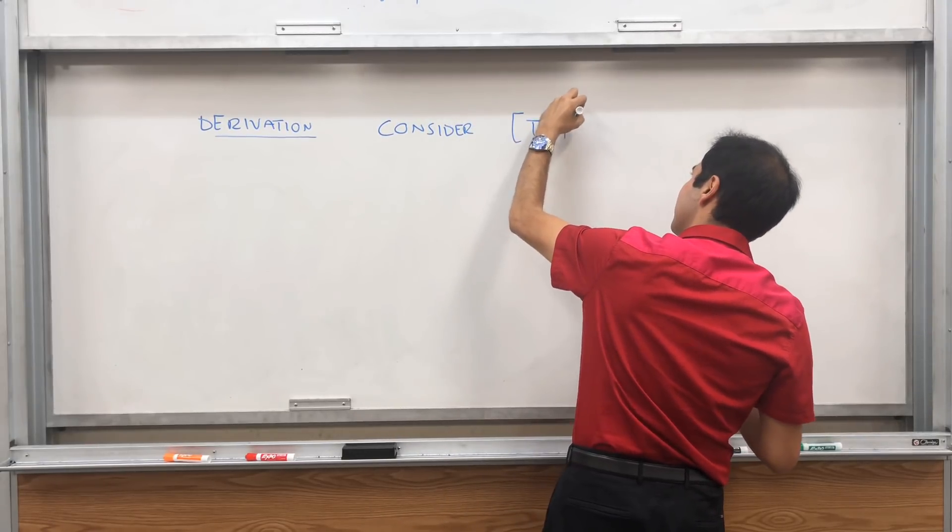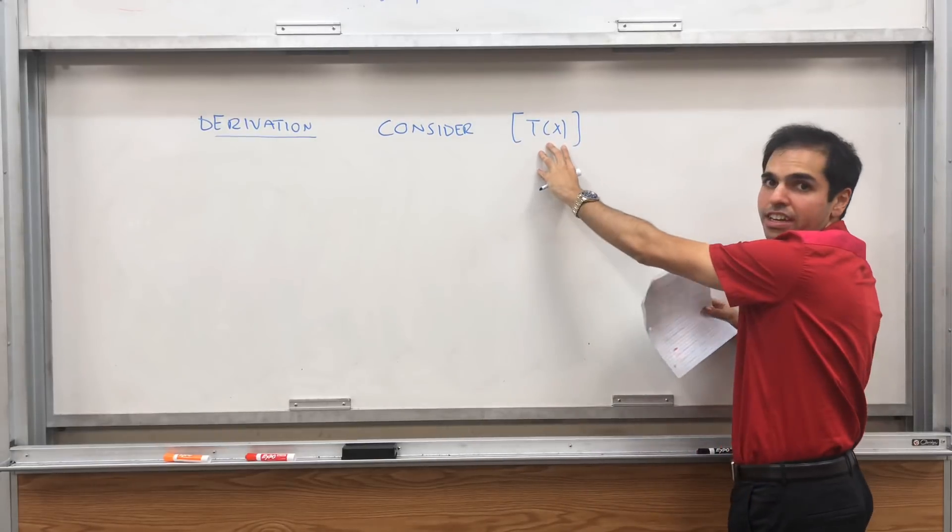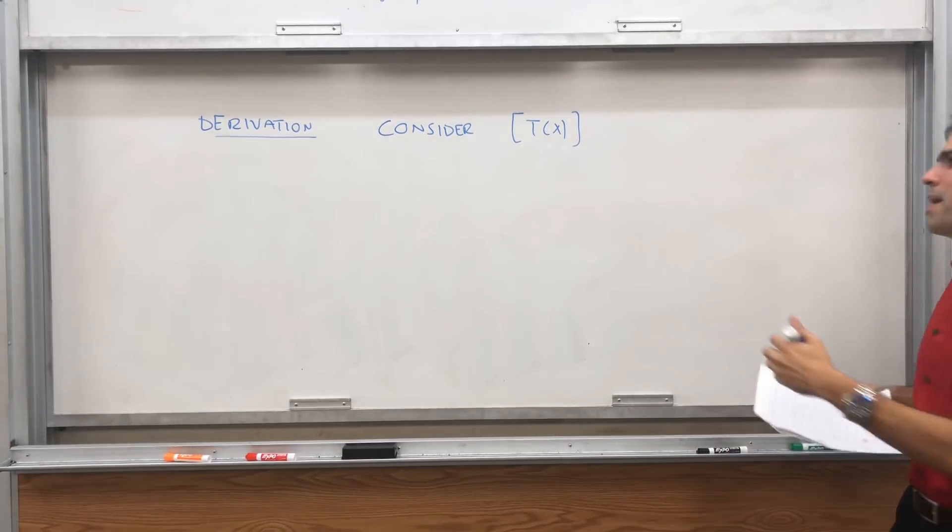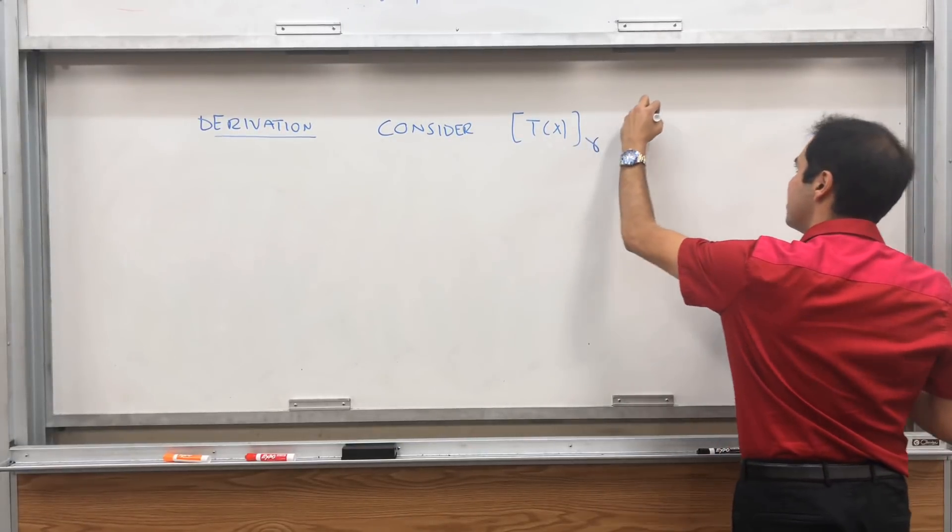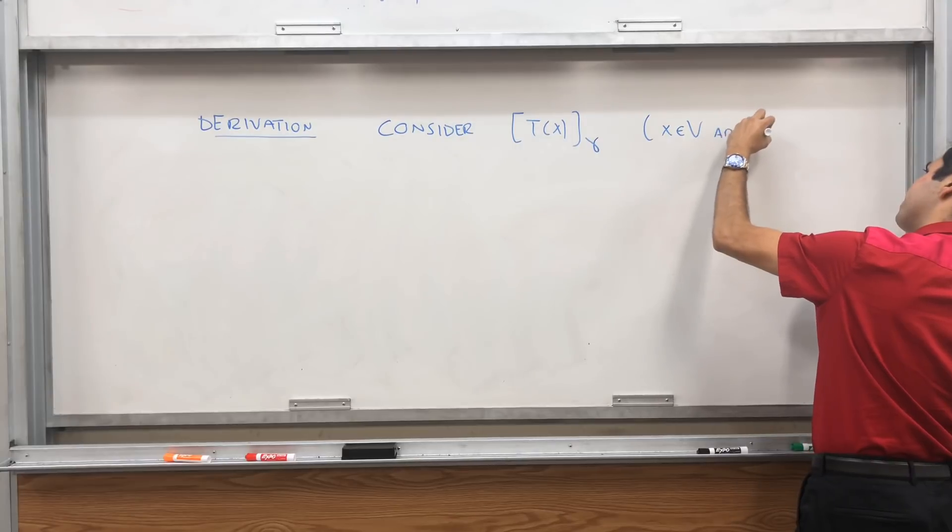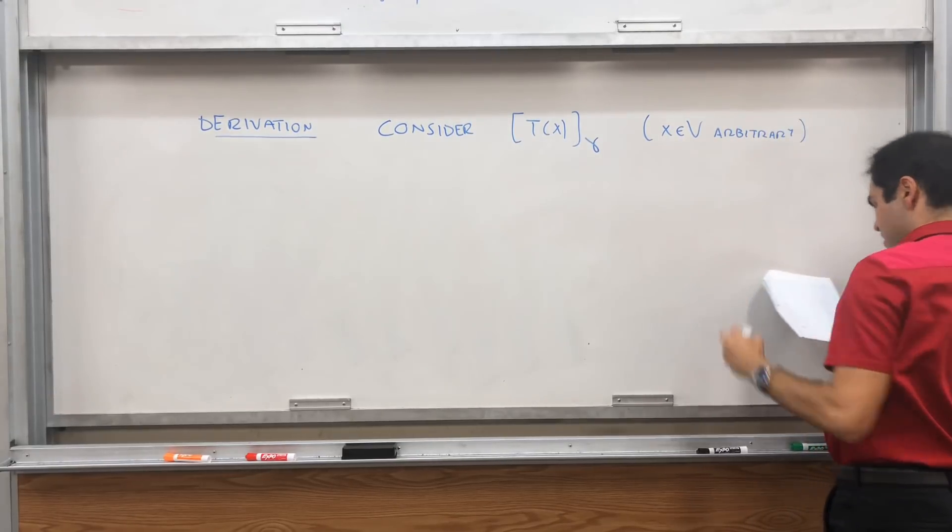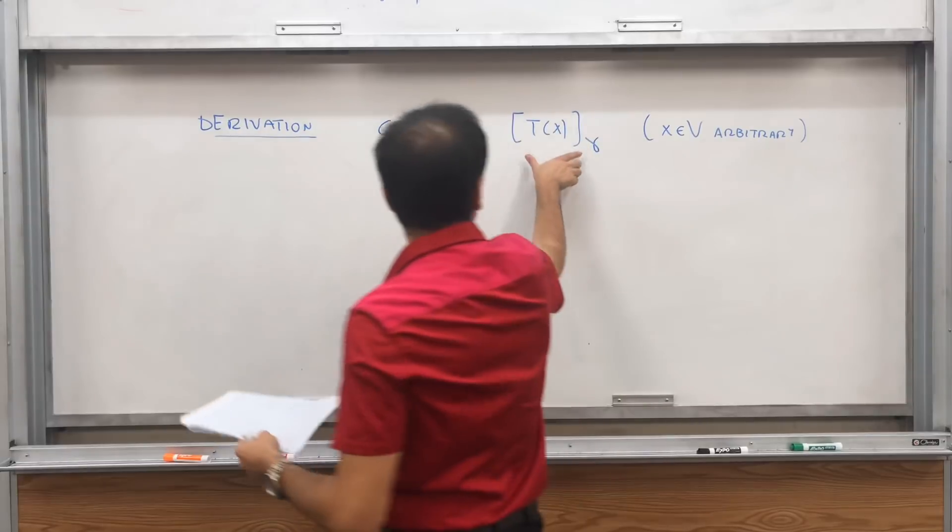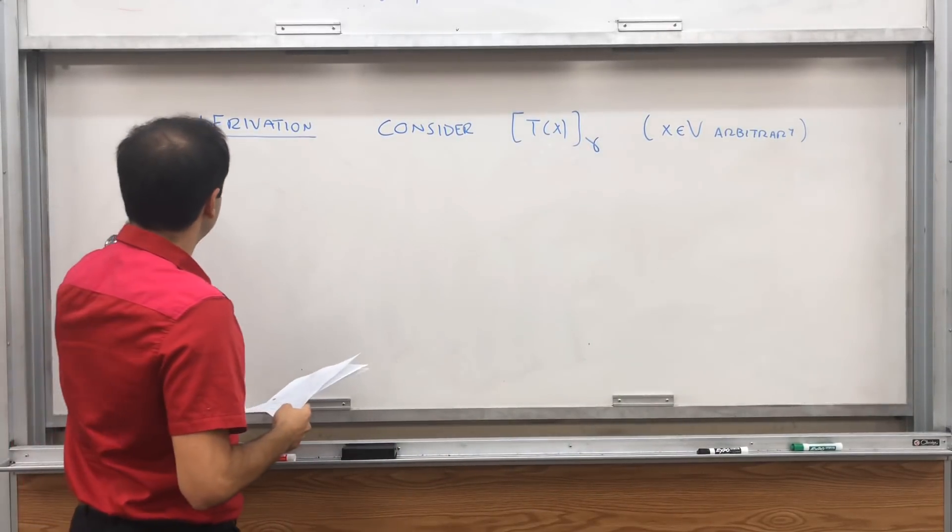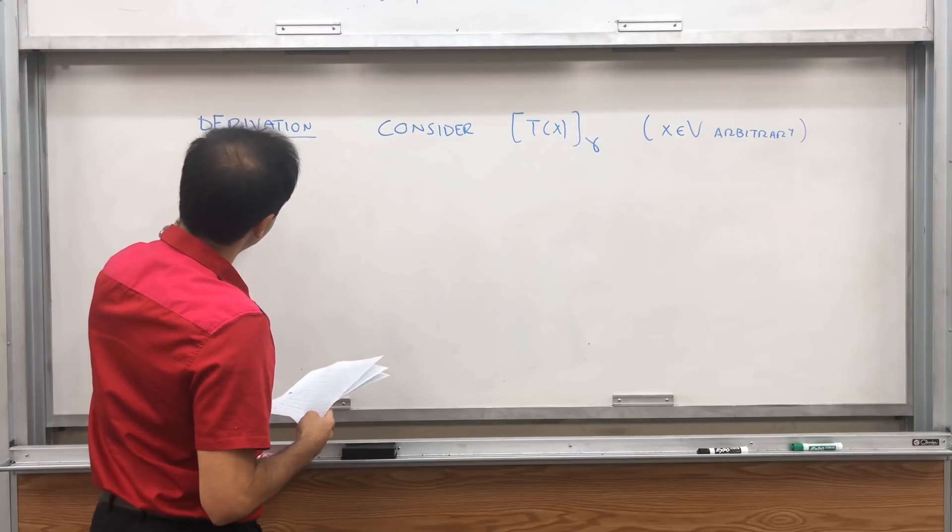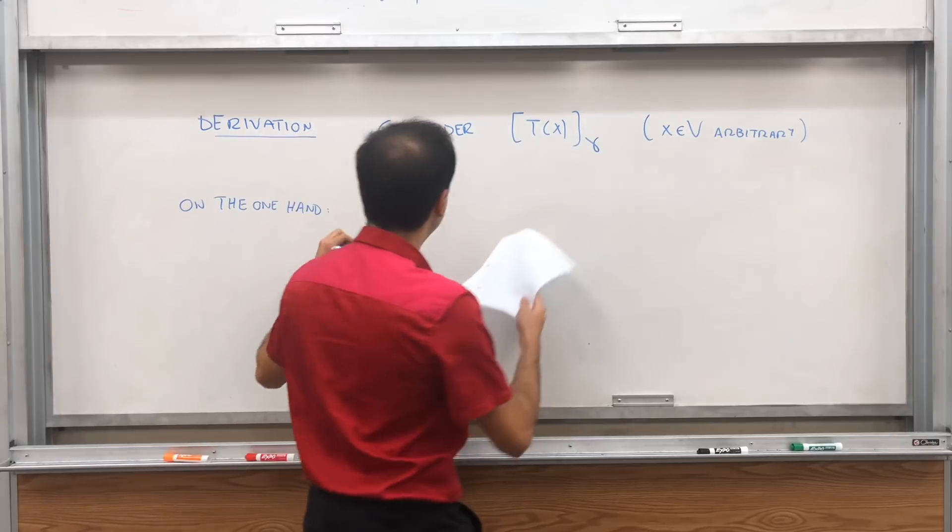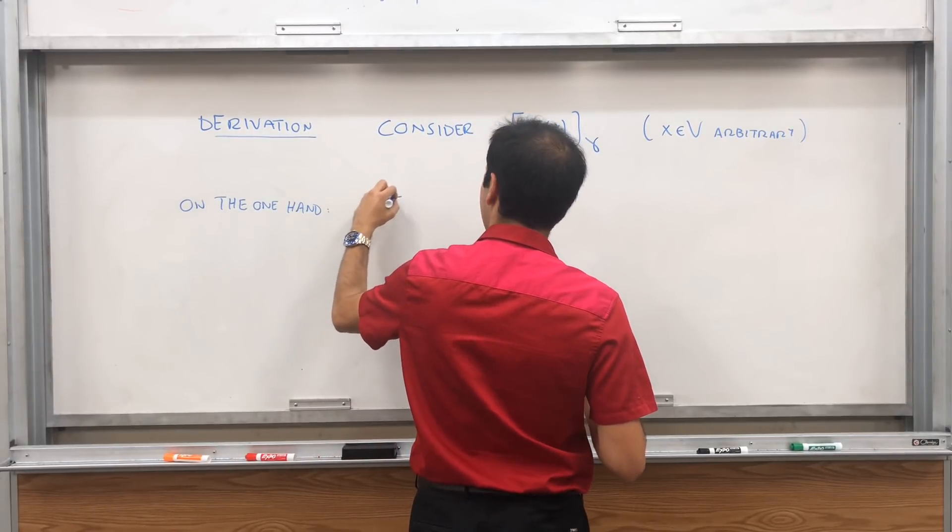T of X, so this is a vector in V. In particular, we can evaluate this with respect to the new coordinates. Where X in V is arbitrary. Well, on the one hand, we can use the new matrix of T. By definition of T with gamma and gamma.